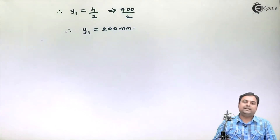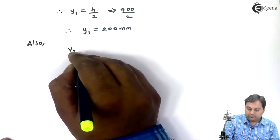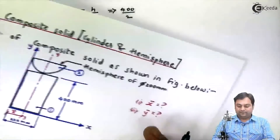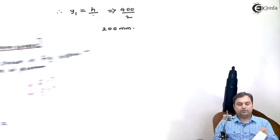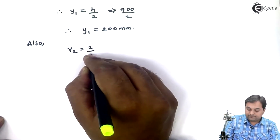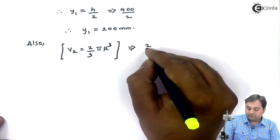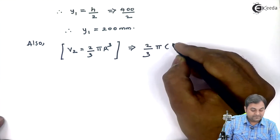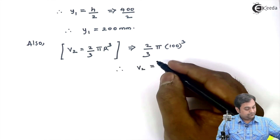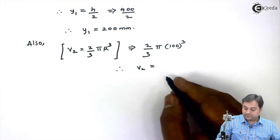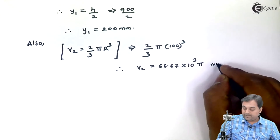Now we calculate V2 for the hemisphere. The hemisphere has diameter 200 mm so radius is 100 mm. The volume of a hemisphere is V2 equals (2/3)π r³, so V2 equals (2/3)π times 100³, which gives V2 equal to 66.67 × 10³ π mm³.